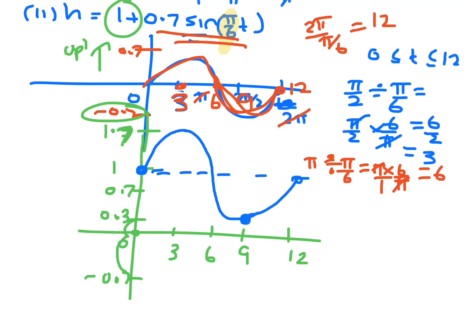So at 9, it would have been at 0.3. At 6, it would have been at 1 again. At 3, it's at 1.7, and at 0, it's at 1. So if you're looking at this, that would be low tide, and that would be high tide, and that would be mid tide. So at what time is at low tide, that would be after 9 seconds, and it is at 0.3 metres at that time.